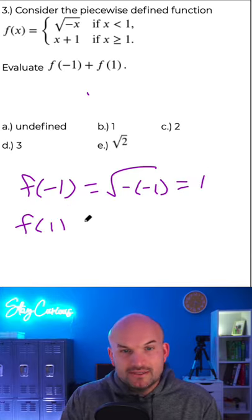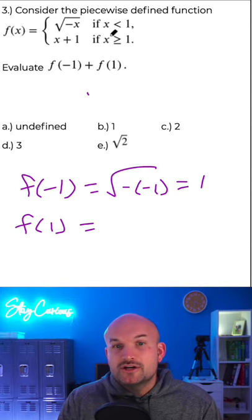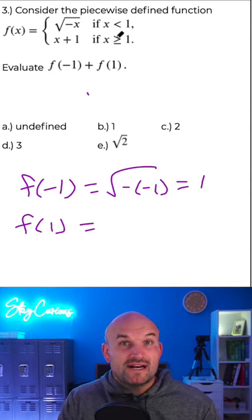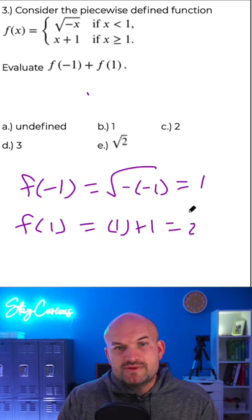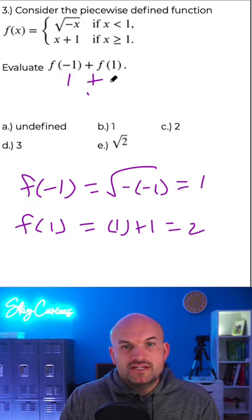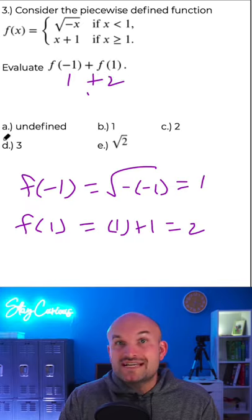And then if I want to do f of 1, I would have here, you're going to plug in here because this is for x values that are greater than or equal to 1. So in this case, we'll have 1 plus 1, which is just going to be 2. So if I have 1 plus 2, that's going to equal 3, which is answer D.